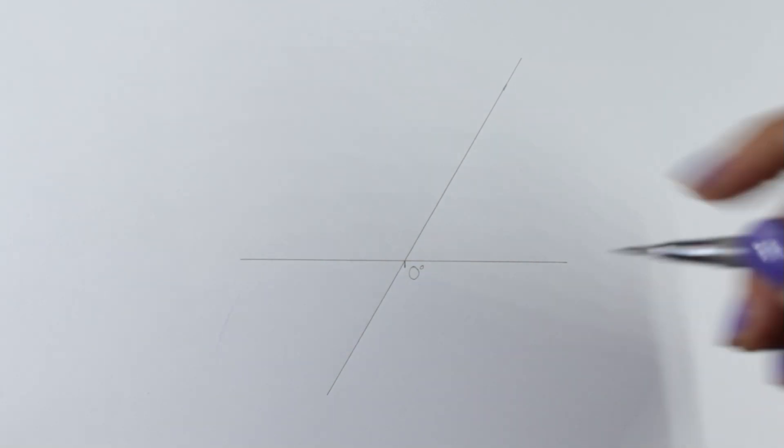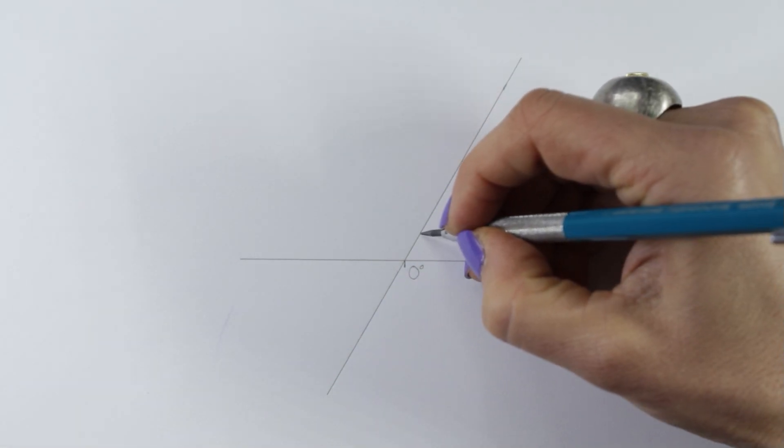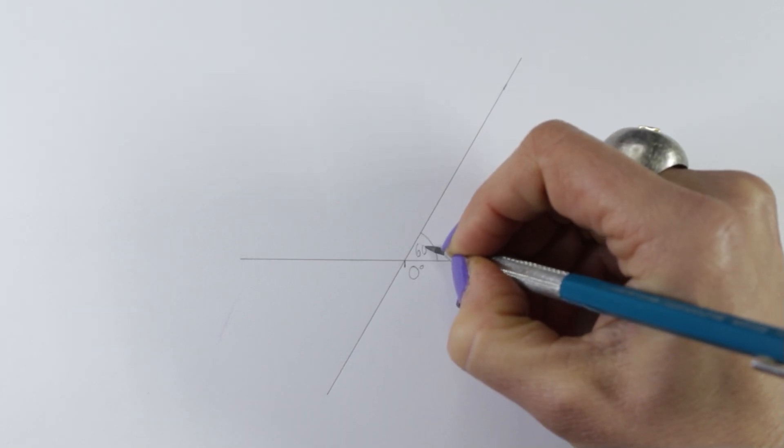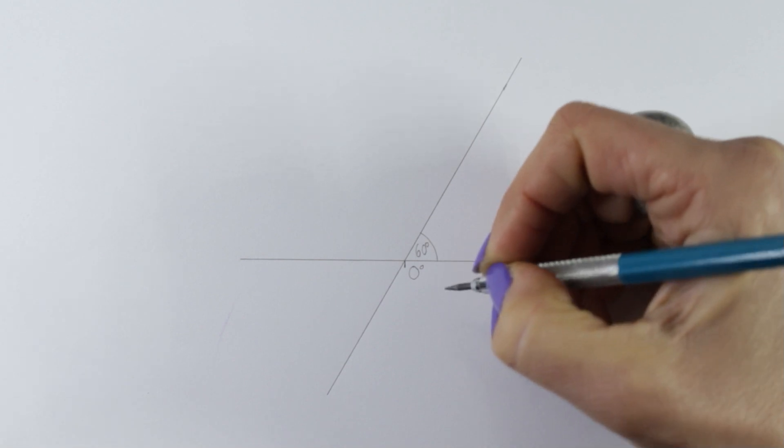To show that this line and the horizontal line are in a 60 degree angle to each other, we draw an arc. Inside this area, we write the degree number, in this case 60, and a small circle next to it, which is the symbol for degree.